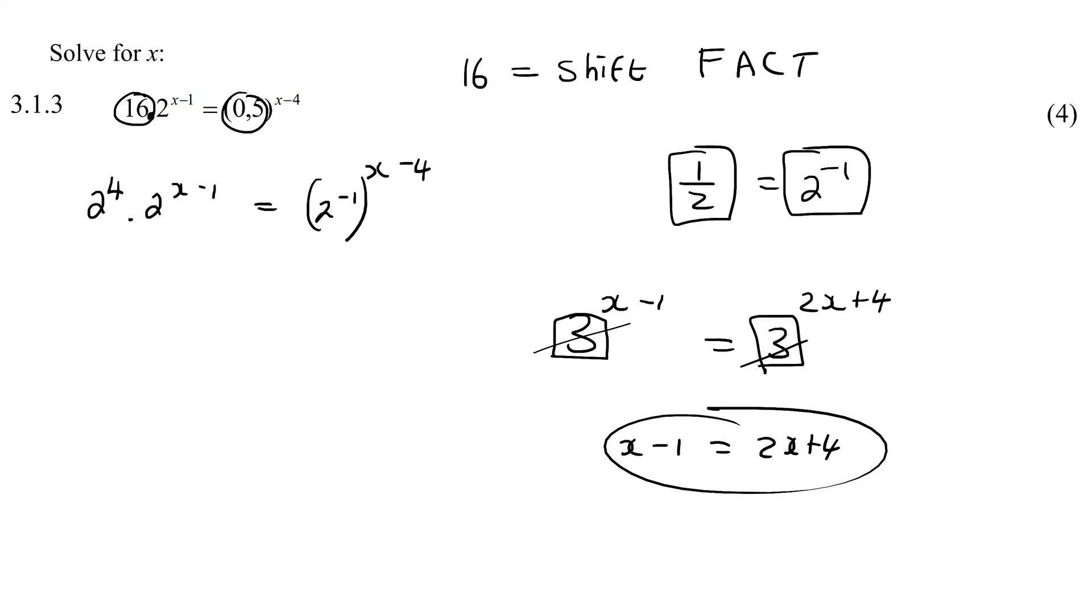Now, when I have something like a to the 3 multiplied by a to the 4, that becomes a to the 7 because we know with exponent rules we must add these numbers. So here I've got these two as the same. So what do I do with these exponents? I add them. And that's going to be 4 plus x minus 1.